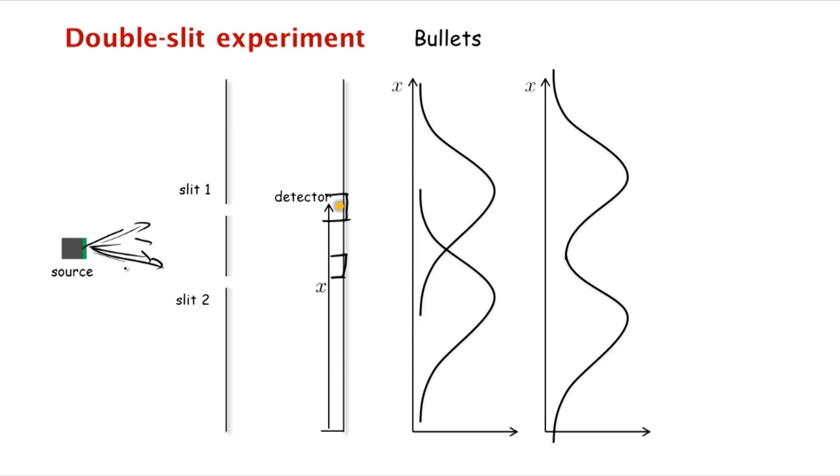So now what do we expect to see? Well, what we see is that if we are looking at the probability of arrival of the bullets as a function of x, we see our curve p1 of x when only the first hole is open, the probability of arrival p2 of x when only the second hole is open.